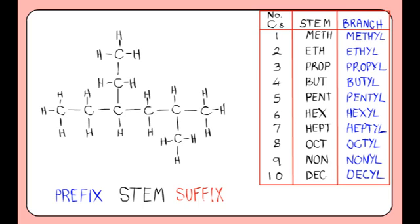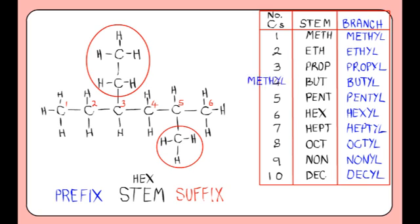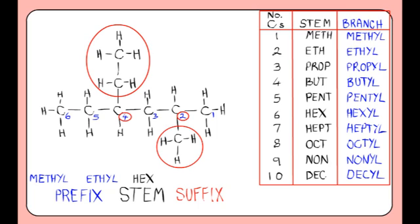Now let's try with this compound. The longest chain is 6, so the stem part of the name is 'hex'. We have a one-carbon branch and a two-carbon branch, named methyl and ethyl. Numbering the chain to give the smallest numbers: the branches on positions 2 and 4 give a total of 6, which is lower. So we have 2-methyl and 4-ethyl in our prefix. We put our branches in alphabetical order, so ethyl comes before methyl. Our compound is 4-ethyl-2-methylhexane.